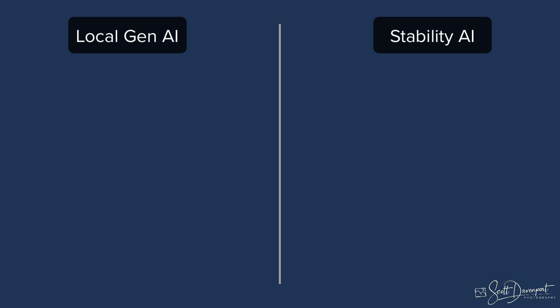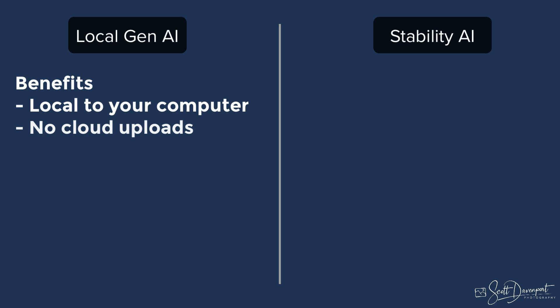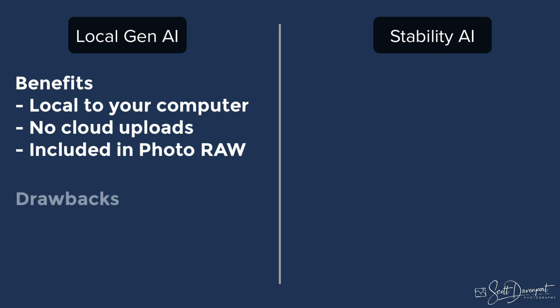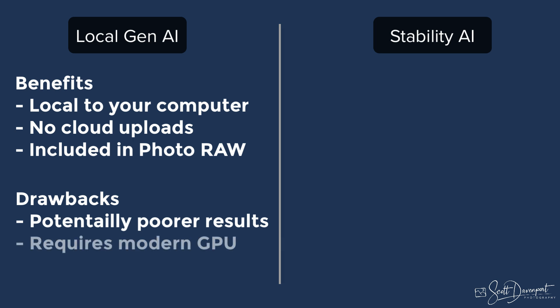With Local Gen AI, the benefits: it runs locally on your computer, you don't need an internet connection, your images stay on your machine and aren't going to the cloud, and it's included with OnOne Photo Raw 2025. The drawbacks: you might see inferior results compared to Stability AI in some cases, it's always a little lower resolution when doing AI generation, and it requires a modern dedicated GPU. If your computer doesn't have a strong dedicated graphics unit, Local Gen AI may not even be available to you.